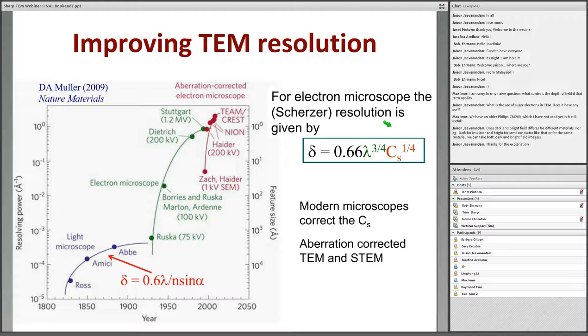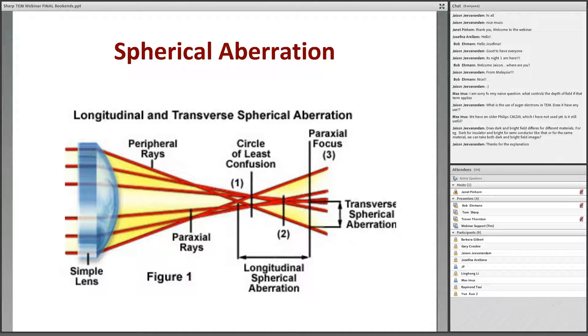The other way to approach this is to go after the spherical aberration coefficient. This can be done by an aberration corrector. Modern microscopes have aberration correction. This last part of the graph illustrates the effect of aberration correction. If we can get rid of or reduce that spherical aberration coefficient, we then increase our resolution. Here's what spherical aberration is schematically. All lenses have spherical aberration.